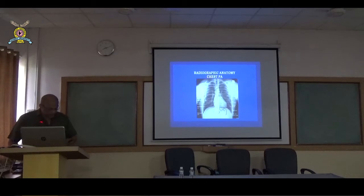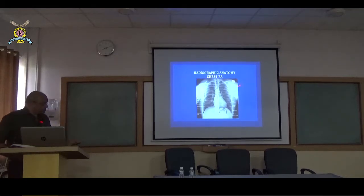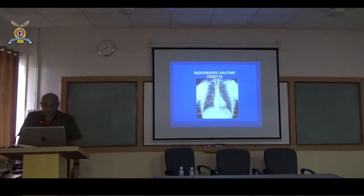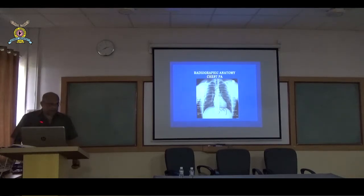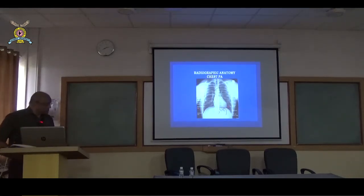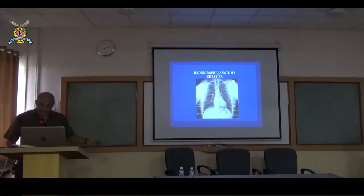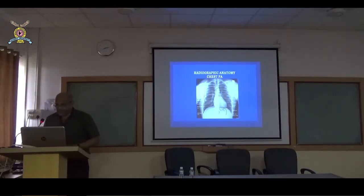Like in the adult X-ray, the cardiothoracic ratio is important — the maximum diameter of the heart to the maximum diameter of the thorax, measured from the inner border of the ribs. In children the upper limit of normal is 60 percent, while in adults it is 50 percent. So this is the small difference as far as cardiomegaly goes.